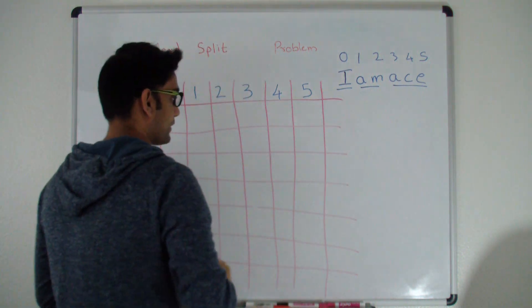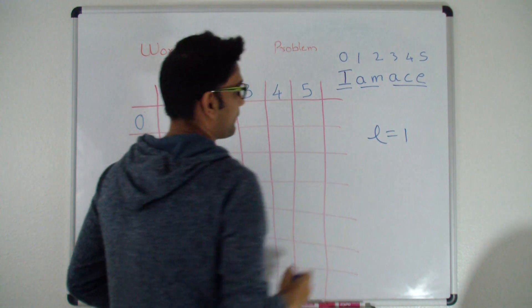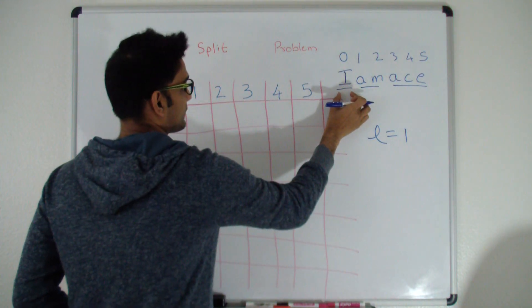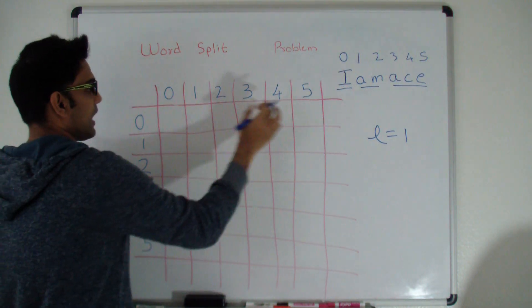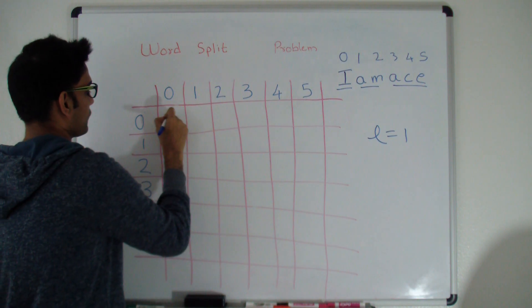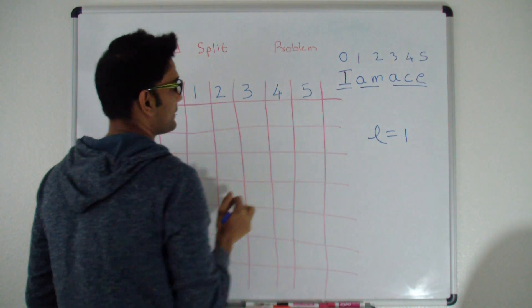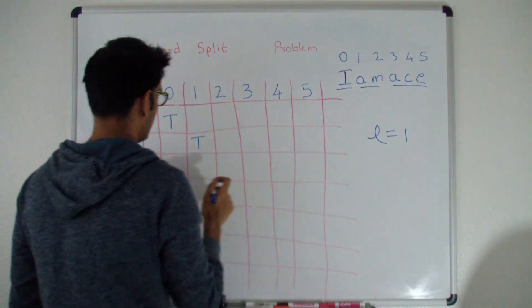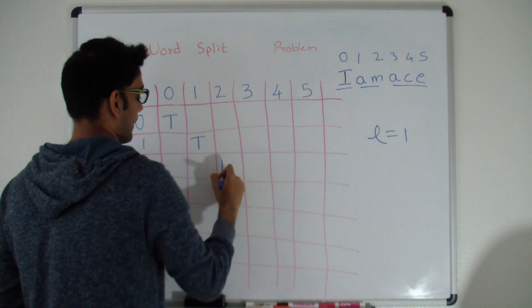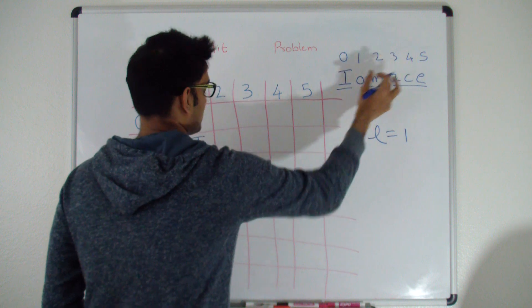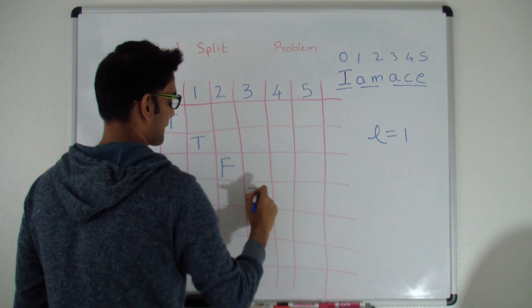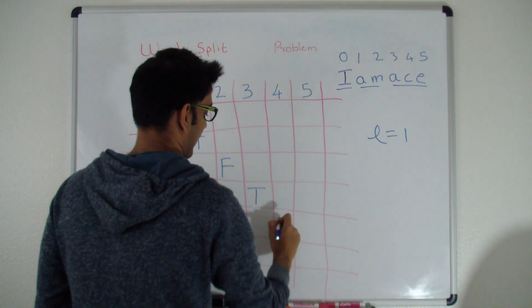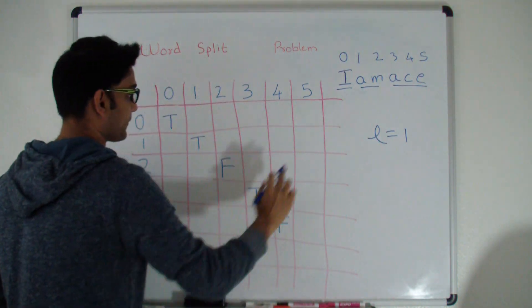Let's start with L equals 1, meaning we consider one character at a time. Position (0,0) is 'I' — is I a word in the dictionary? Yes, so it's true. Position (1,1) is 'A' — yes, true. Position (2,2) is 'M' — no, so false. Position (3,3) is 'A' — yes, true. Position (4,4) is 'C' — no, false. Position (5,5) is 'E' — no, false.